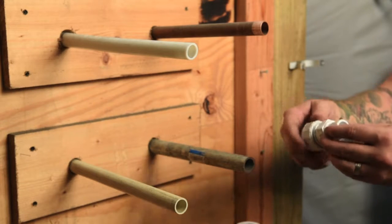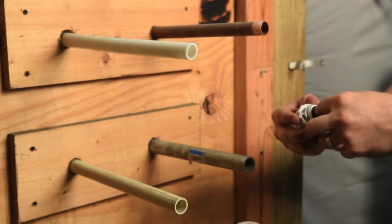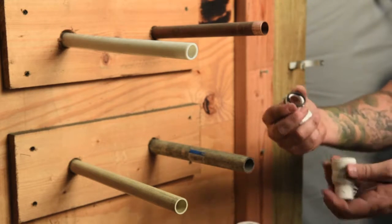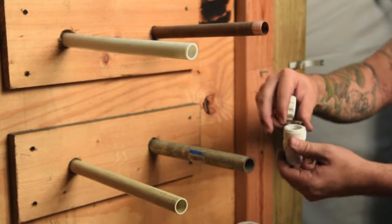With the compression fitting you have the compression nut followed by three different internal pieces: the o-ring, the metal spacer, and the metal ring.